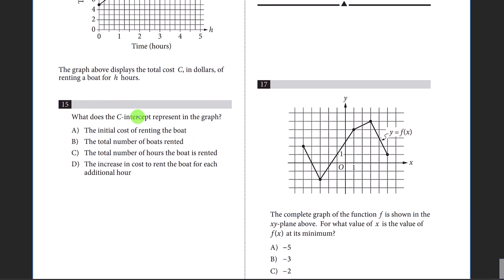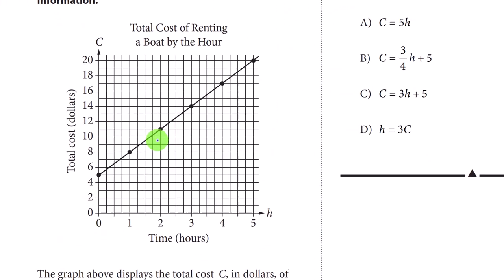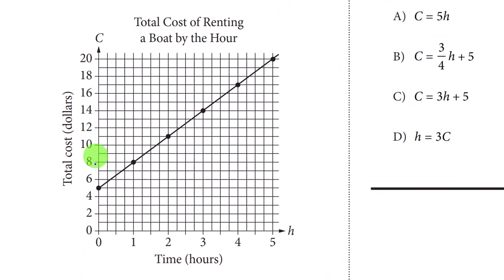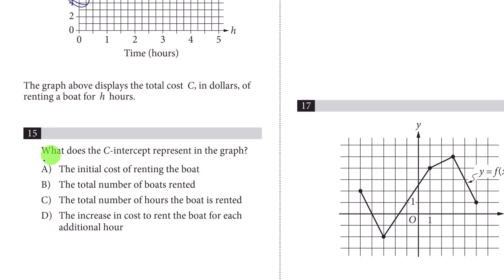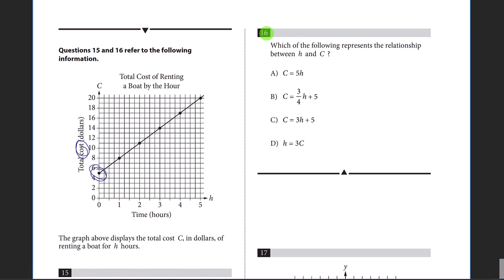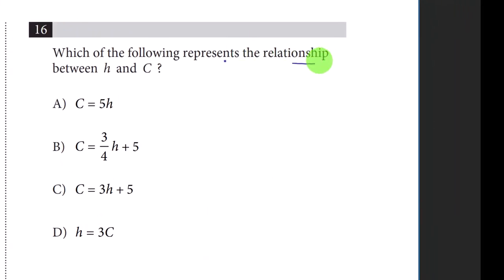Question fifteen: what does the c-intercept represent in the graph? We have total cost on the vertical axis and time in hours on the horizontal axis. At zero hours it still costs five dollars, which means that is the initial cost of running the boat.